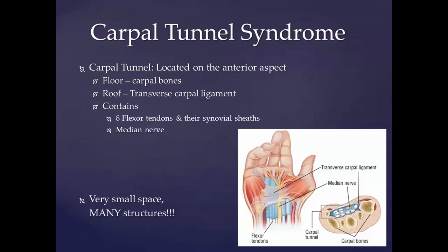The carpal tunnel is located on the anterior aspect of the wrist. It is composed of a floor — the carpal bones — and a roof, which is the transverse carpal ligament. It contains eight flexor tendons and their synovial sheaths, as well as the median nerve. There are a lot of structures in a very small space.